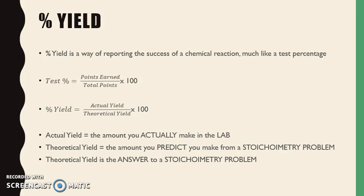We're going to do essentially the same thing for a chemical reaction — instead of points, we're earning grams. The amount you actually make in the lab is like the points you earn, and we call that the actual yield. The points the test is worth is like the theoretical yield — the amount you should make in a perfect world, which is the answer to your stoichiometry problem. So: actual yield divided by theoretical yield times 100 gives us percent yield.